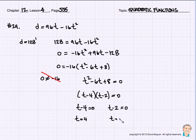Well, that tells me that t minus 4 must be 0 and t minus 2 must be 0. Well, if I solve for t, t turns out to be 4 seconds and t turns out to be 2 seconds. And so there are two answers.